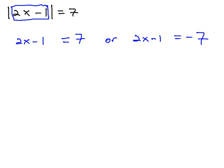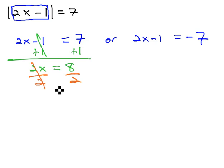We can solve each of these two equations quite quickly because we're very comfortable with solving two-step equations. Adding 1 to both sides to the first equation gives us 2x equals 8, and finally dividing both sides by 2 tells us that x equals 4.